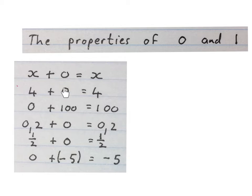Firstly, if you add 0 to any value in maths, the original value stays. So x plus 0 is x, 4 plus 0 is 4, any value plus 0 stays the original value.